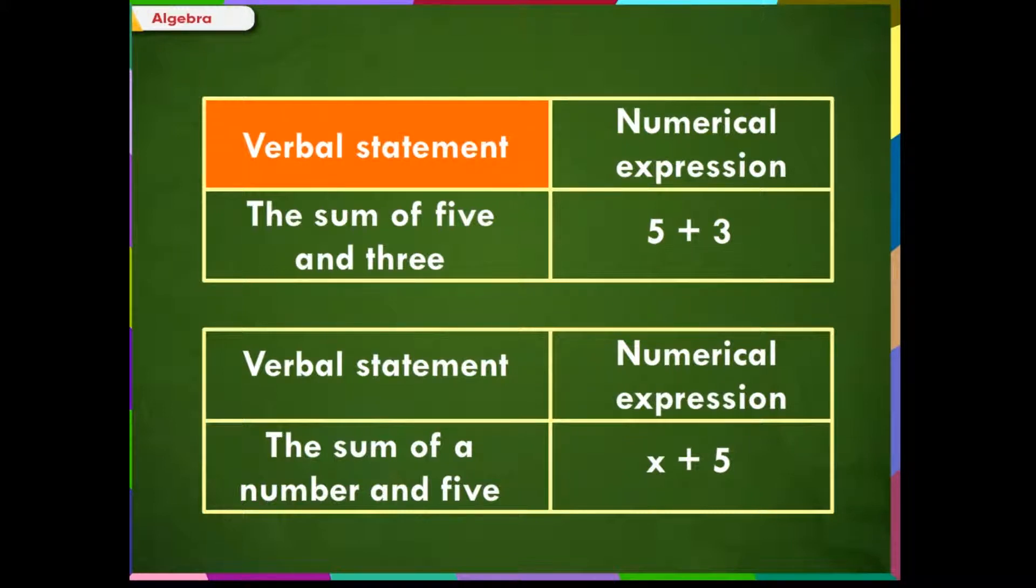How do we write the verbal statement 'The sum of 5 and 3'? We write it as 5 plus 3. This is a numerical expression. Now let me say this verbal statement in a different way: The sum of a number and 5.